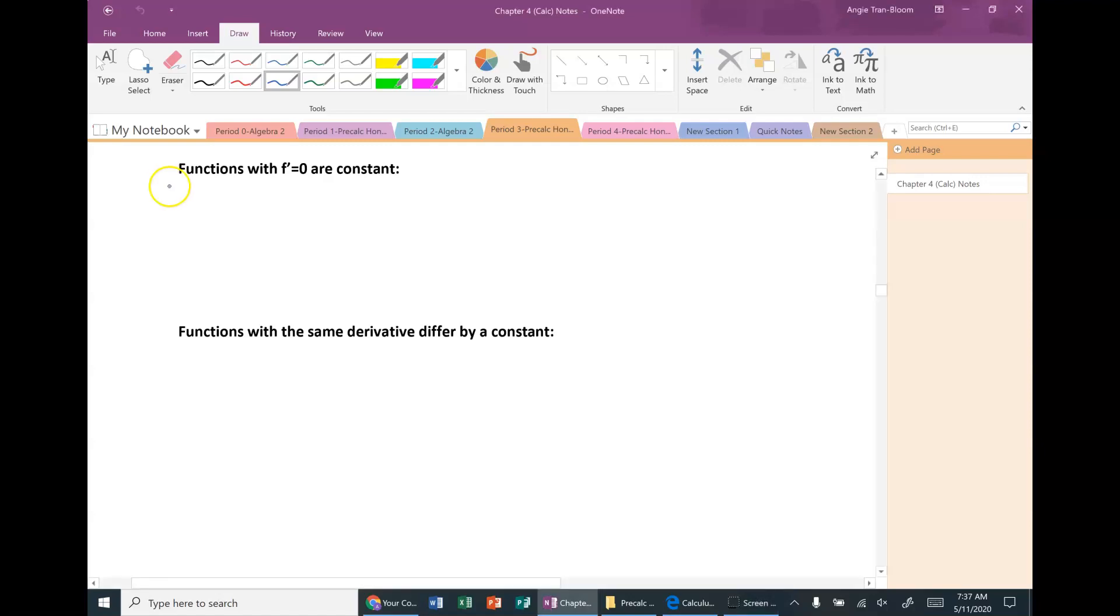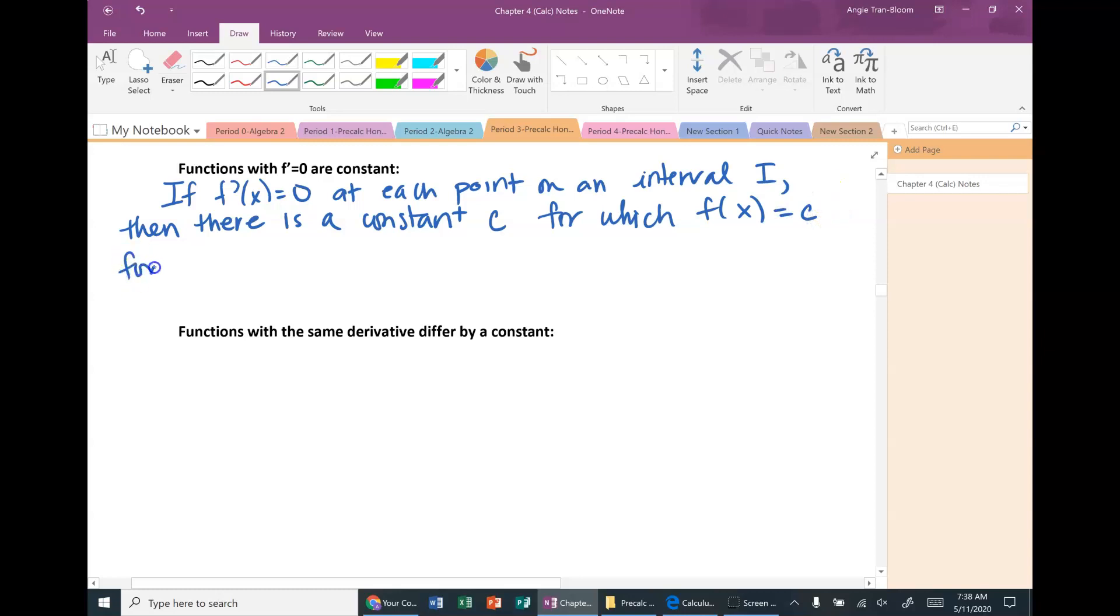If f prime of x equals 0 at each point on an interval i, then there is a constant c for which f of x equals c for all x in the domain of i.